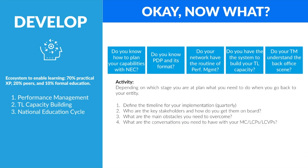To make sure your entity is ready to properly implement the develop phase, start by defining the timeline for your implementation at least quarterly — what needs to happen in performance management, team leader capacity building, and national education cycle? Identify who the key stakeholders are and how you get them on board. Who in your entity right now is not on board, and if they were, it would make implementation of the education cycle, PDP, performance management routine, and team leader routine more effective?